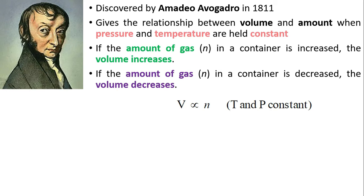Considering that T and P, or temperature and pressure, are constant. The formula for Avogadro's law is V1 over N1 is equal to V2 over N2.